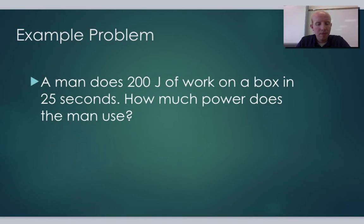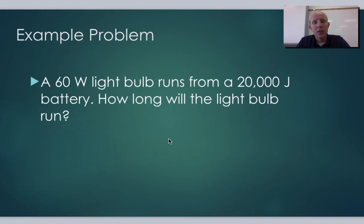Here's another one. A 60-watt light bulb runs from a 20,000-joule battery. How long will the light bulb run? Well, again, we say power equals work over time. And in this case, it's really just energy. So I'm just going to replace this W with E. You can do that. There's nothing wrong with that.